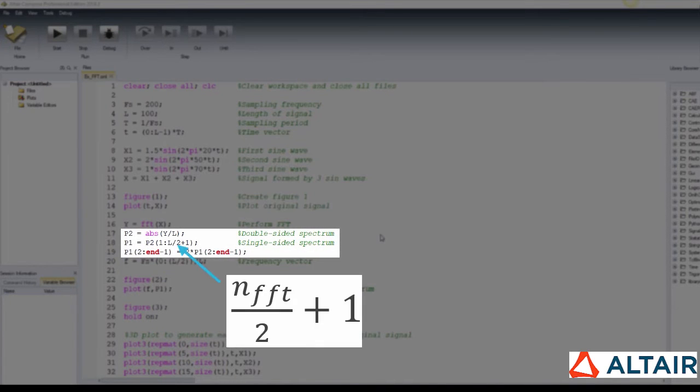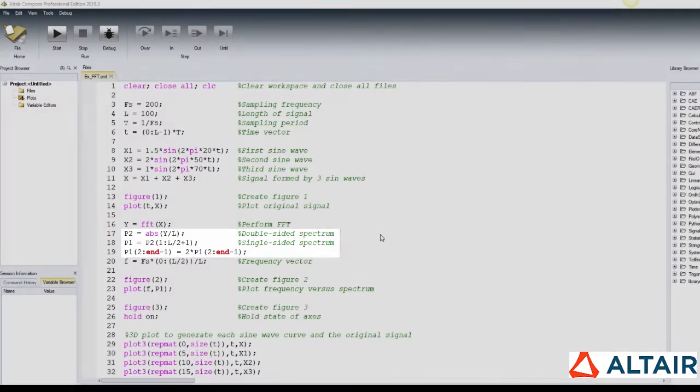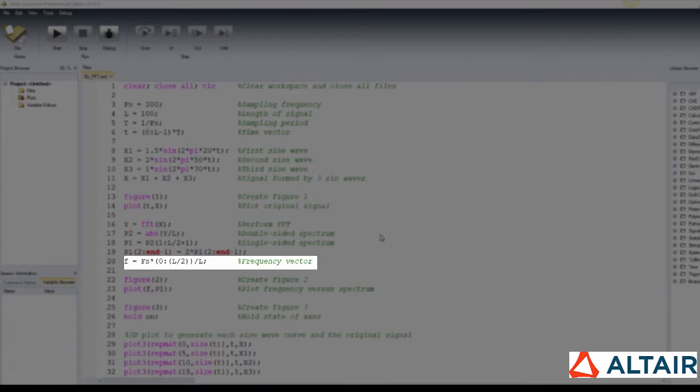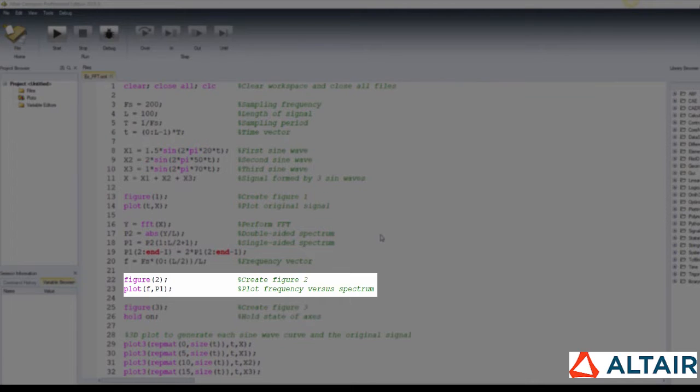Half the signal at the length of the FFT divided by 2 plus 1 is discarded, which is the Nyquist frequency. Then, let's create the frequency vector based on the Nyquist frequency. Create a new figure and plot the frequency vector in the x-axis and the frequency domain representation in the y-axis, having the signal amplitude as a function of frequency.